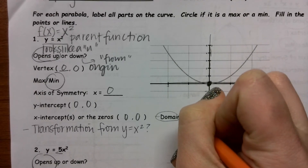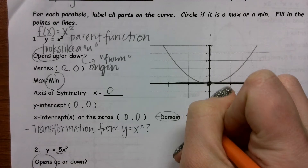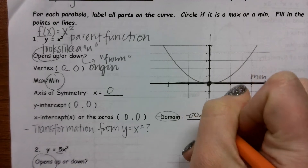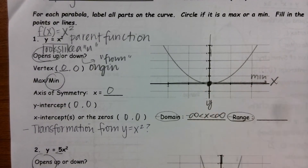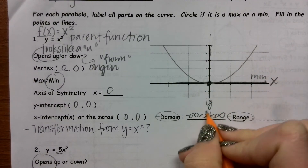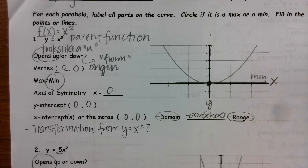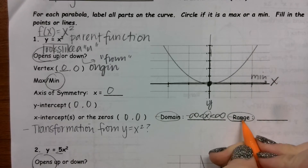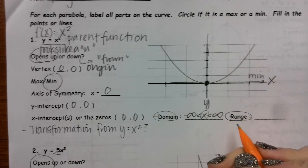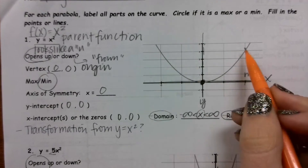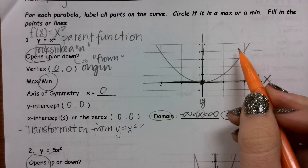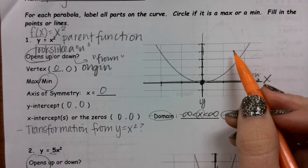The domain in all mathematical problems is always going to be all real numbers. Make sure that you use the proper variable for domain. Your range value is going to depend on how the parabola opens up like a U or down like a frown.